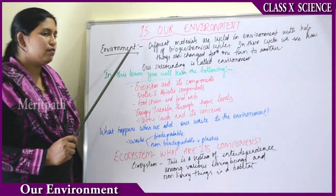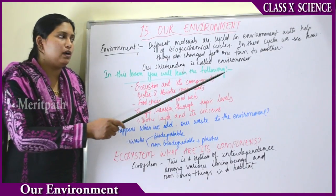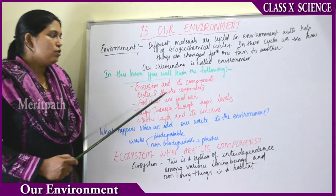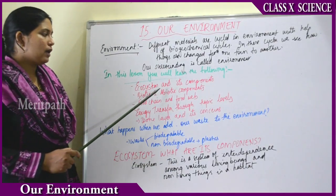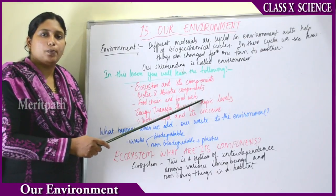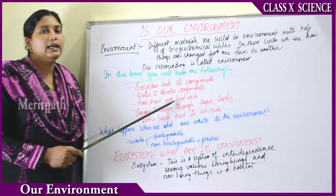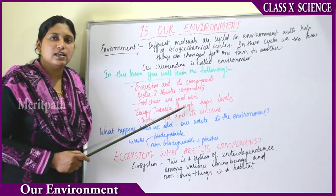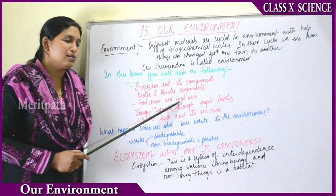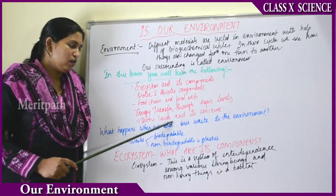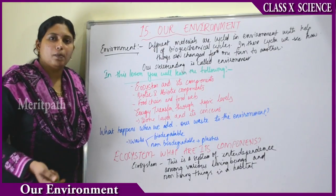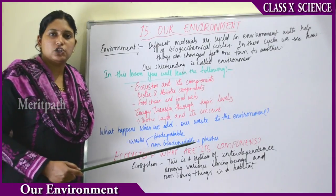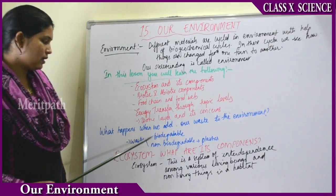So what is the environment? Our surroundings is called the environment — that is the definition. In this lesson, we will learn about the ecosystem and its components, biotic and abiotic components, food chains and food webs, how organisms are interrelated, energy transfer through the trophic levels, and the ozone layer and its depletion.